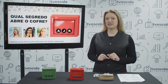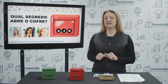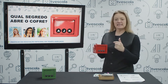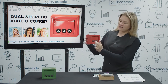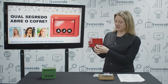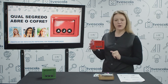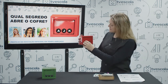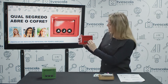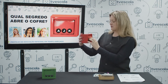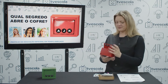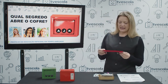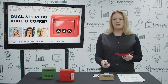Descobrindo o que tem no cofre vermelho: as iniciais dos nomes das professoras são as letras que formam a sequência que precisa ser colocada em cada um dos botões para abrirmos o cofre vermelho. Vamos lá: A, J, K. Abriu o cofre! Tem uma palavra aqui — está escrito: criptografia.